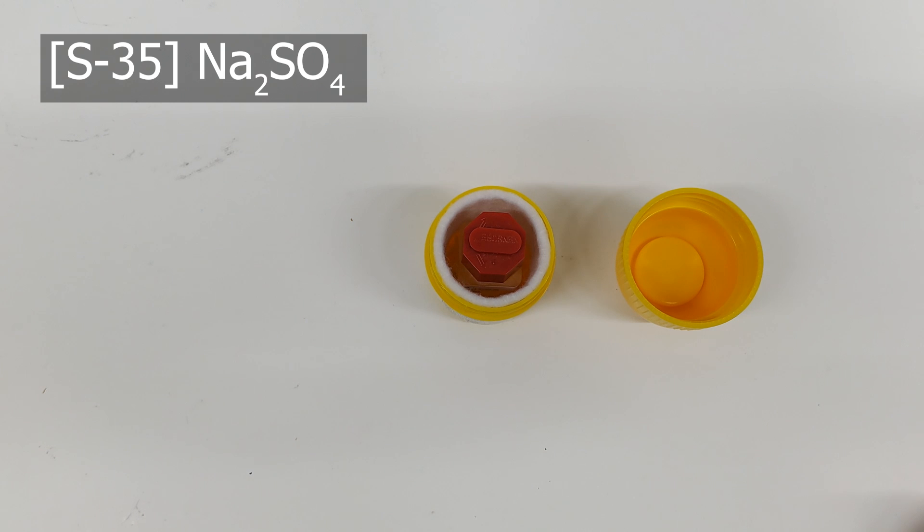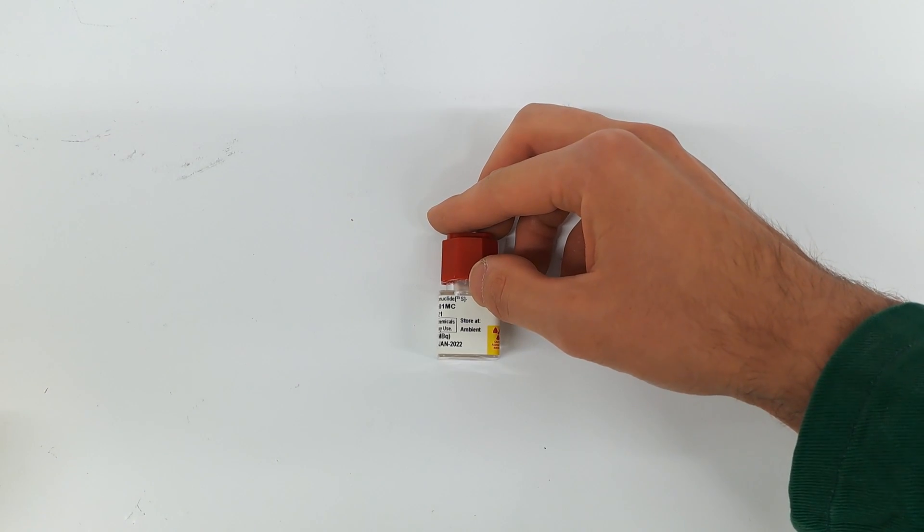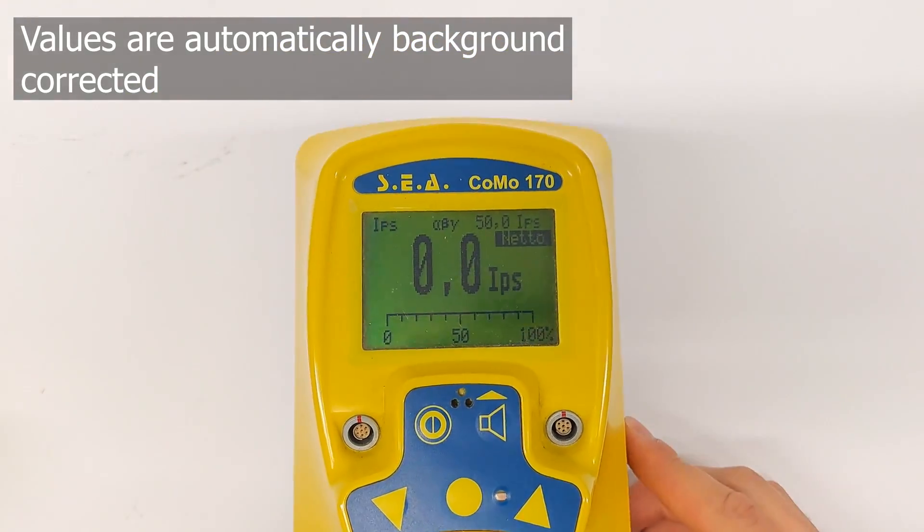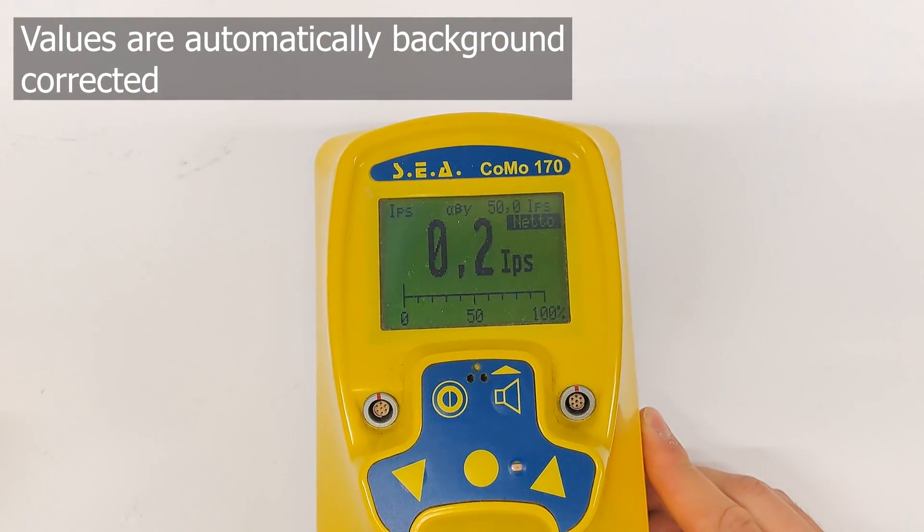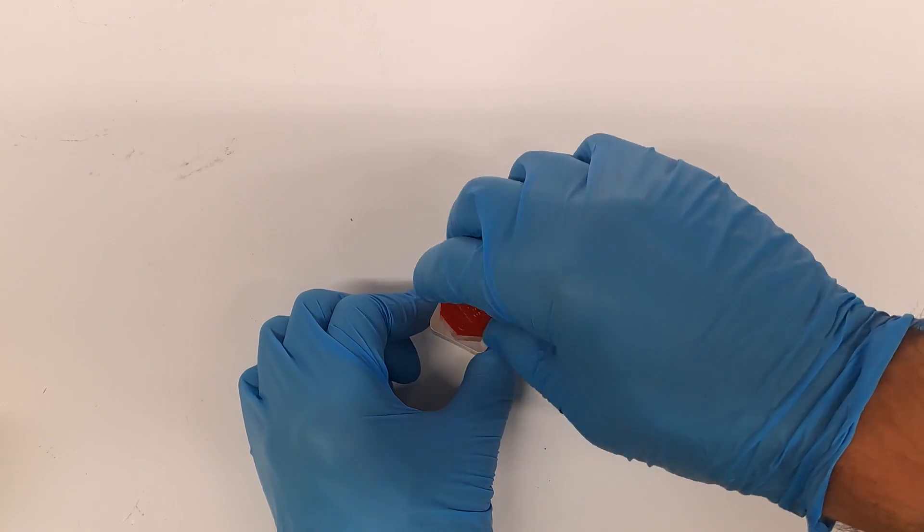Lead is generally unfavorable for beta emitters due to Bremsstrahlung or breaking radiation. I do not measure anything until I open the lid and only then do I realize that this solution is still radioactive enough.